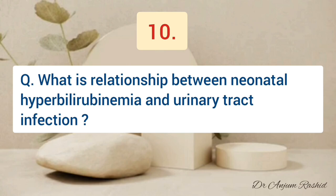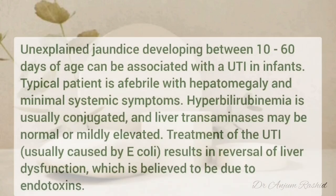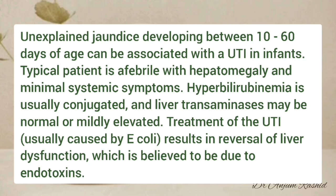What is the relationship between neonatal hyperbilirubinemia and urinary tract infection? Unexplained jaundice developing between 10 and 60 days of age can be associated with a UTI in infants. The typical patient is afebrile with hepatomegaly and minimal systemic symptoms. Hyperbilirubinemia is usually conjugated and liver transaminases may be normal or mildly elevated. Treatment of UTI usually results in reversal of liver dysfunction, believed to be due to endotoxin produced by E. coli.